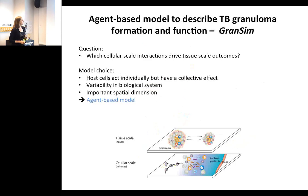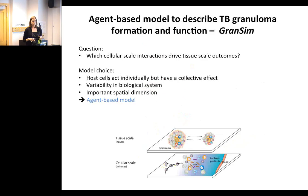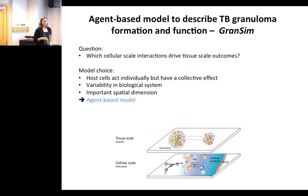I'll start with agent-based models and how we use them to describe TB granuloma formation. The question here is: which cellular-level interactions drive tissue-scale outcomes — specifically, what cellular mechanisms are important to form these immune structures called granulomas? We need a model that allows individual host cells to act on their own so we can look at collective effects at the tissue scale. We also need to capture variability in the biological system with a stochastic component, and capture the structural aspect of granulomas. Agent-based models check all these boxes, connecting the cellular and tissue scale.